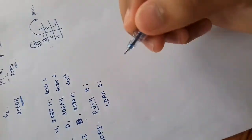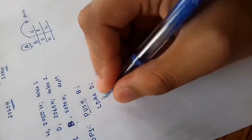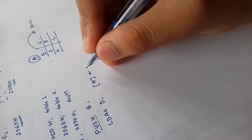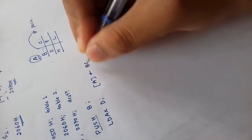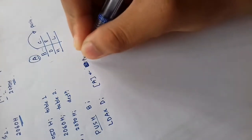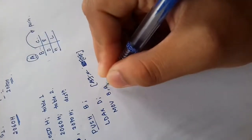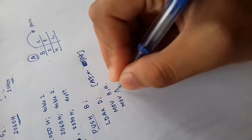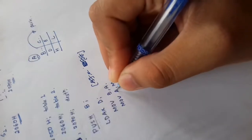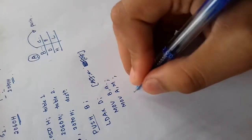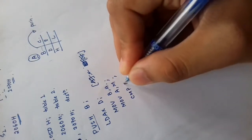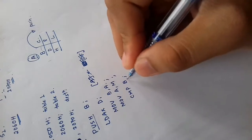LDAX D loads the accumulator indirectly — it is a 1-byte instruction. We copy that content and move the accumulator content to register B. Then we move the content of the memory pointed by the HL register pair to the accumulator, and we compare the value in B with the accumulator.